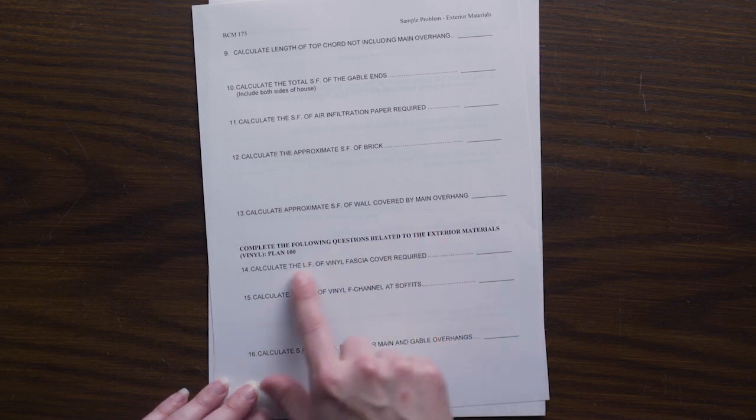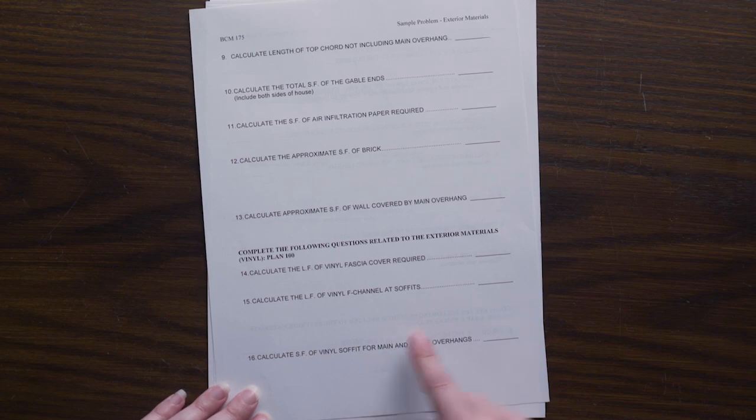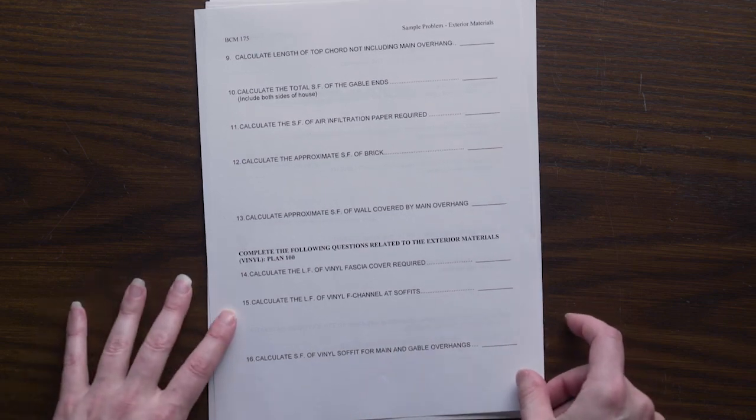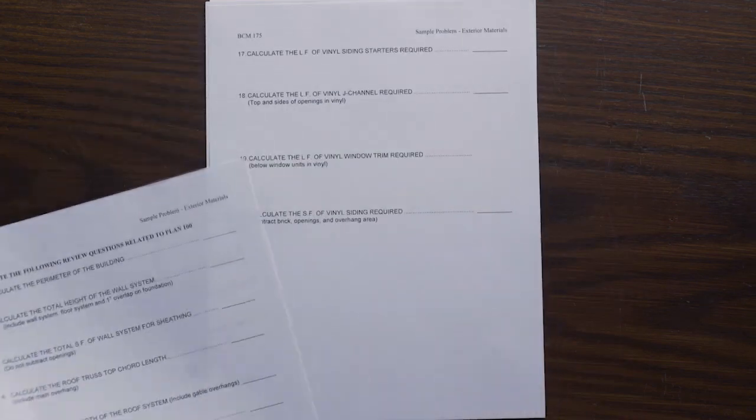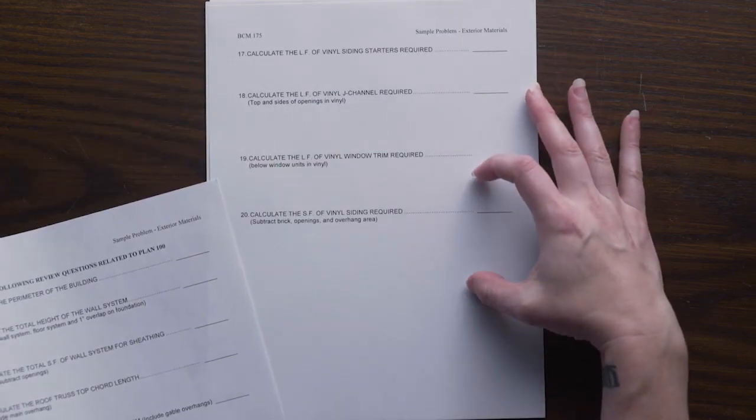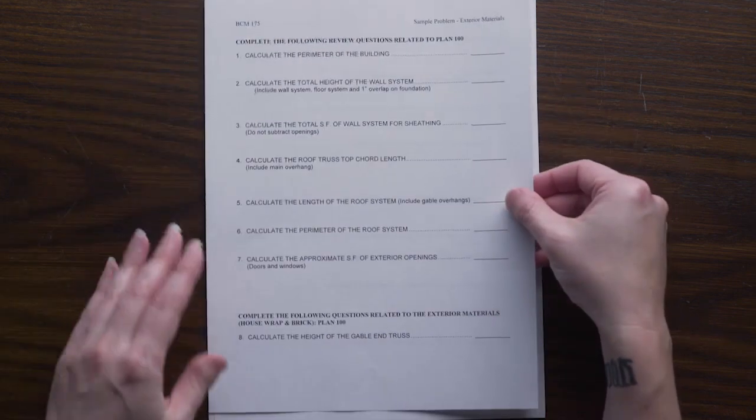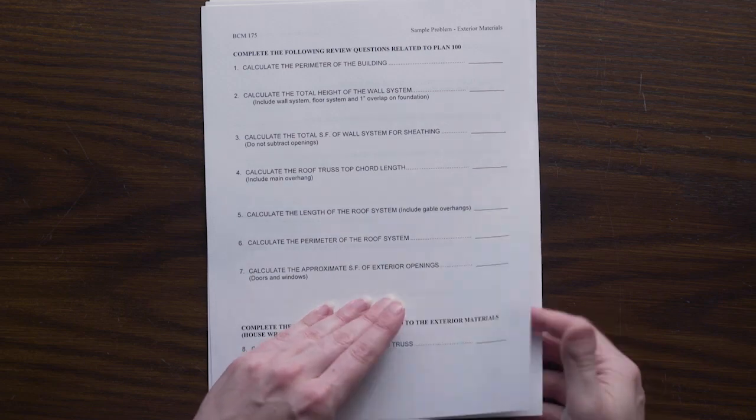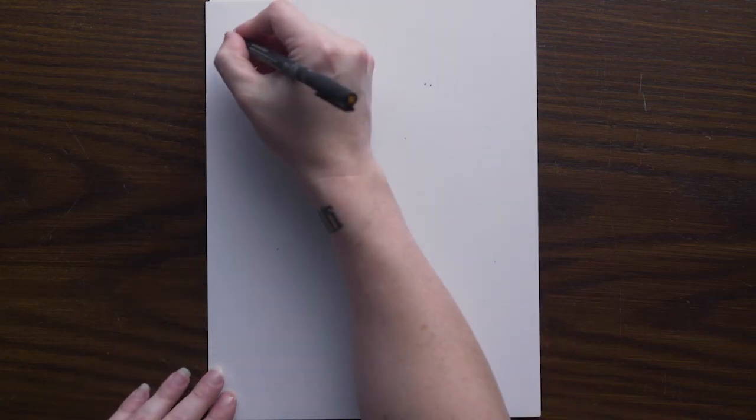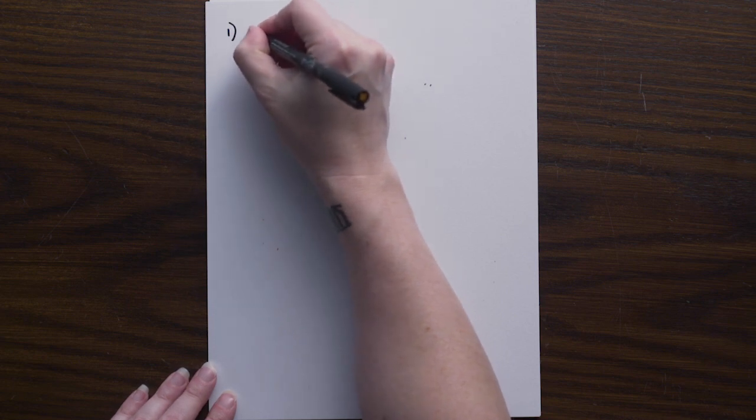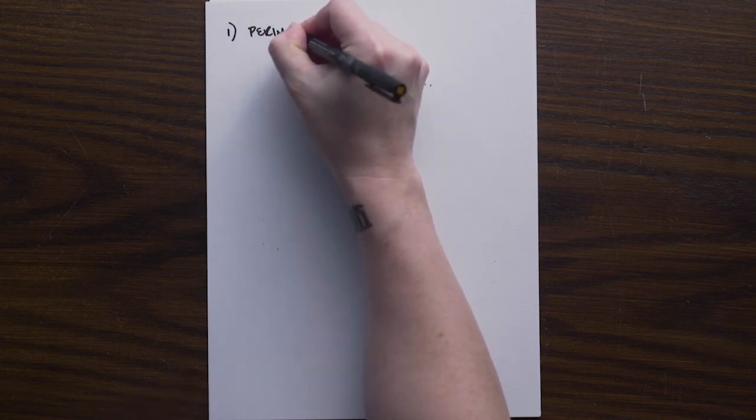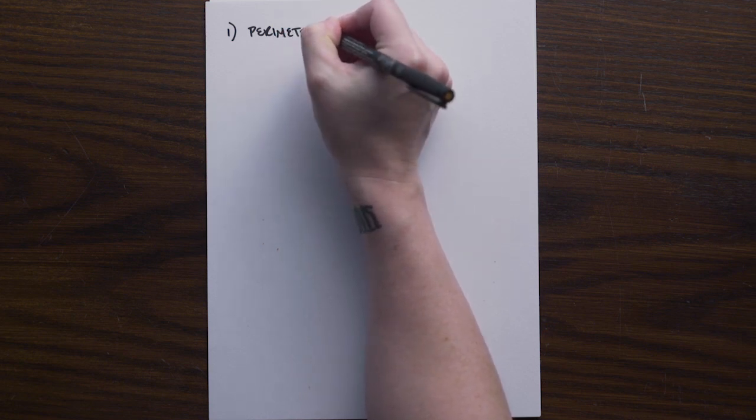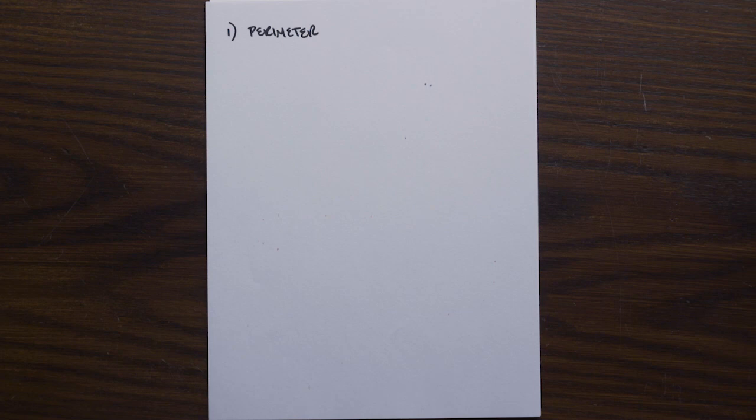Our last problem set will look at all of the vinyl that will be included on the house from the fascia, the F channel, J channel window trim, as well as the siding itself that is on the house. So again, starting off with some of our review problems that we have calculated in previous sample problems. So number one, we are looking at the perimeter of the building.